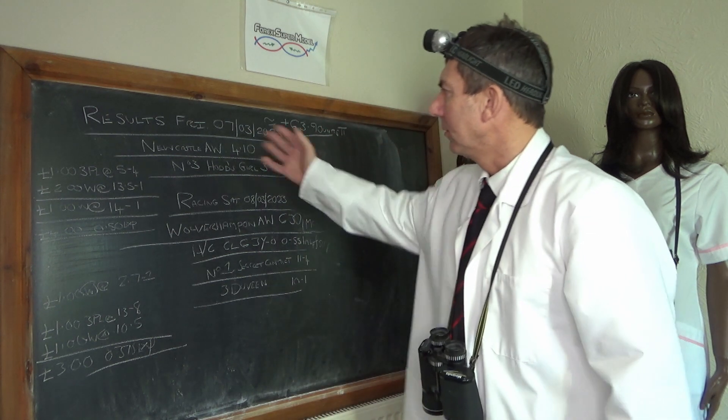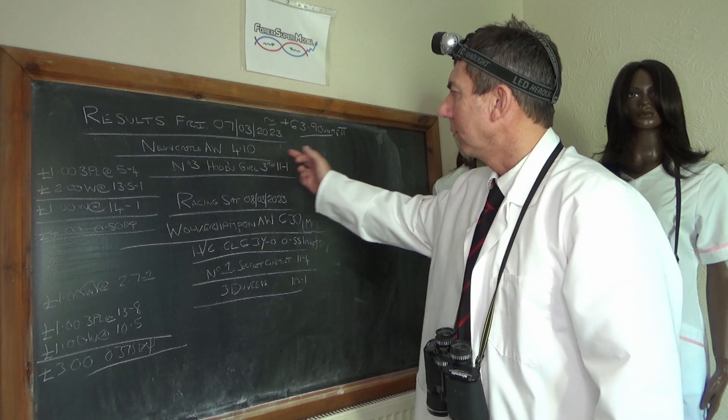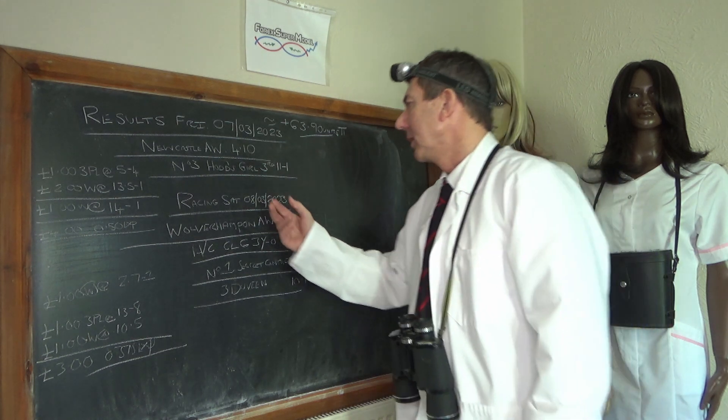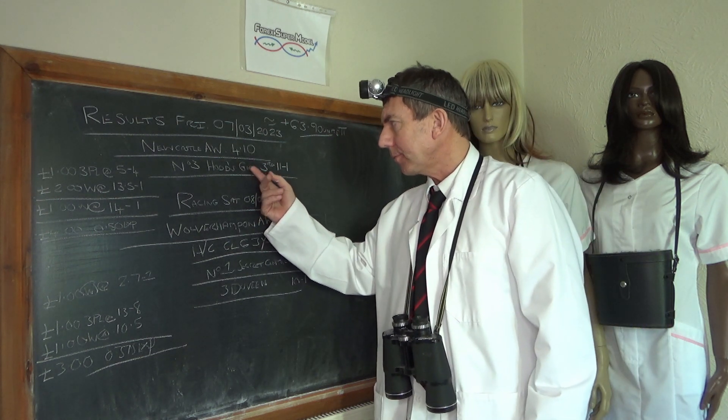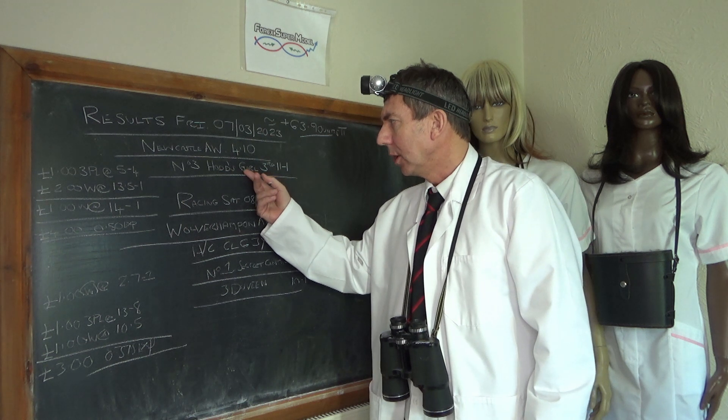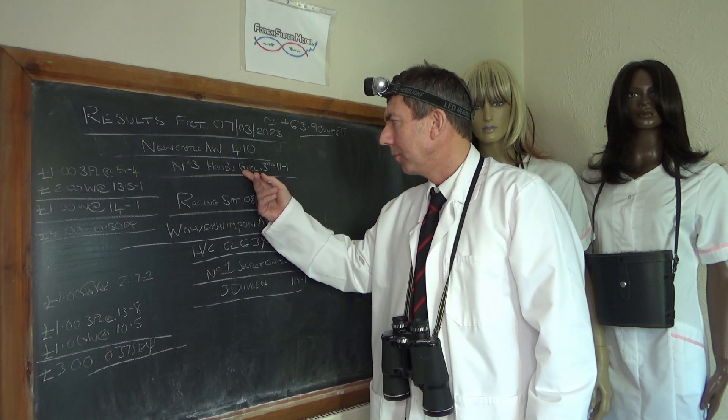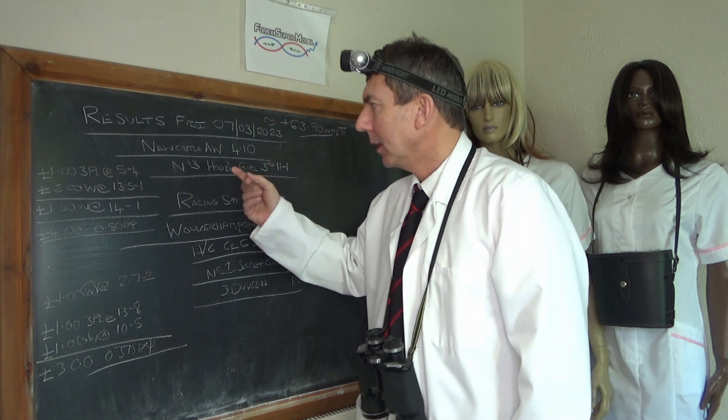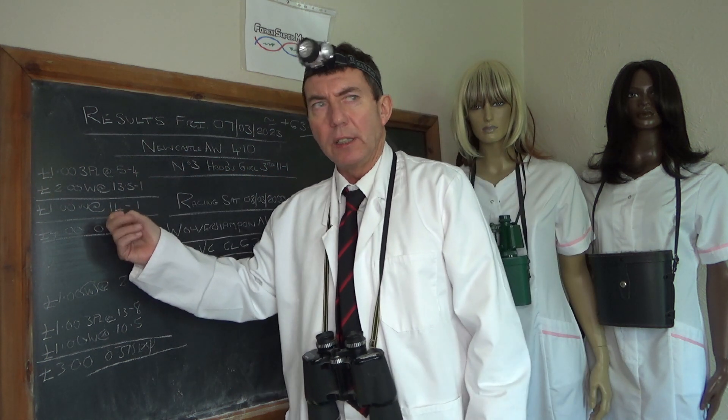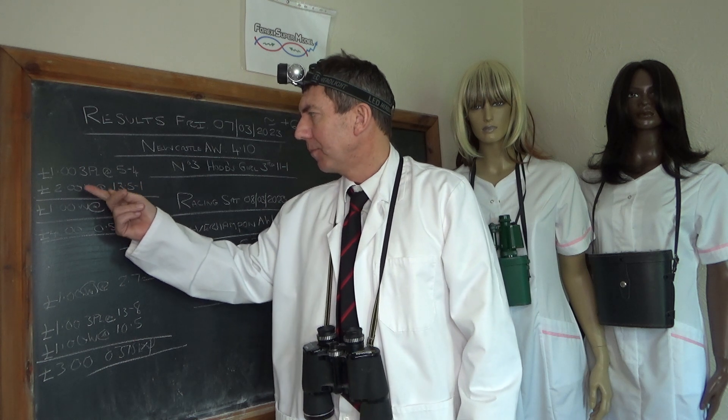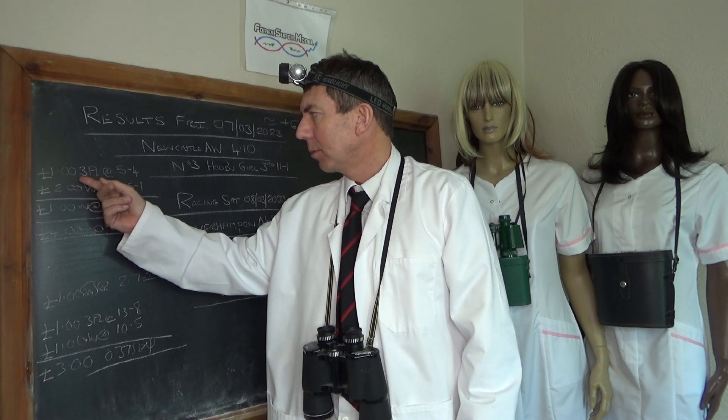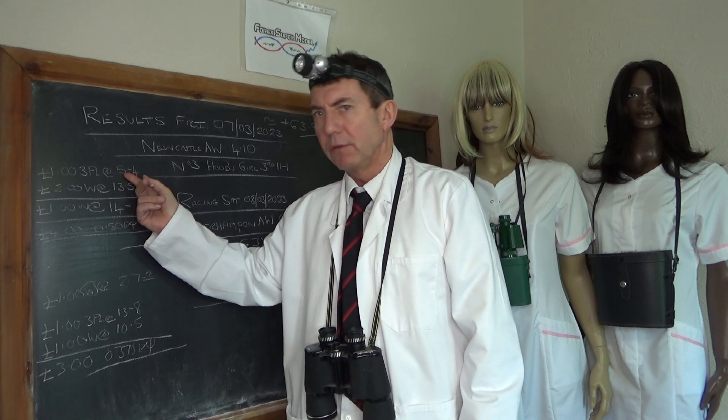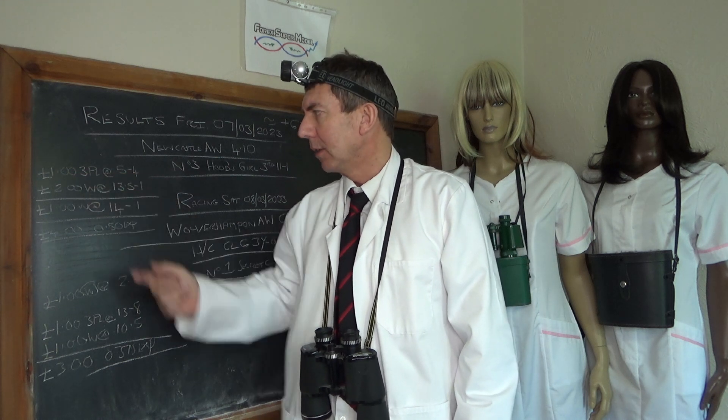Yesterday we had a race, Friday the 7th, Newcastle on the all-weather at 4:10. We were on Hodds Girl, had a good go at that, ultimately came third at 11 to 1. We took on really the tight end front two. We had a pound per eight pound unit on three places at five to four, so that's a hundred pounds for us.